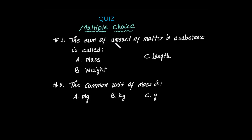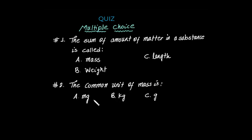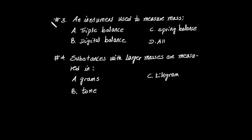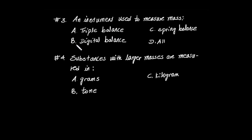Question 1: The amount of matter in a substance is called — A, mass; B, weight; C, length. Question 2: The common unit of mass is — A, milligram; B, kilogram; C, gram. Question 3: An instrument used to measure mass — A, triple balance; B, digital balance; C, spring balance; D, oil. Question 4: Substances of larger mass are measured in — A, gram; B, ton; C, kilogram.